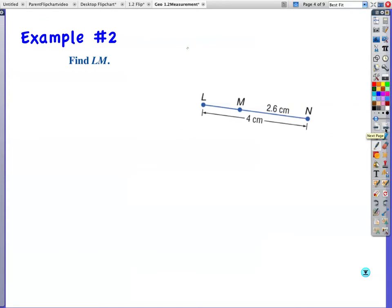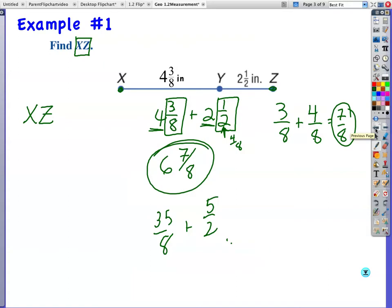Example number 2. Find LM. What does that mean again? Find the distance from L to M. This time, they've given us the entire length of the segment, which is 4, and they've given us the other portion, which is 2.6. So I'm going to have to subtract. 4 minus 2.6. Hopefully you have your calculator with you, but that would be 1.4. And of course, I made a mistake. I should label that 1.4 centimeters. I didn't make the mistake here, but on this one, our answer should be 6 and 7 eighths inches. I would have missed a point on the quiz or a test for that.